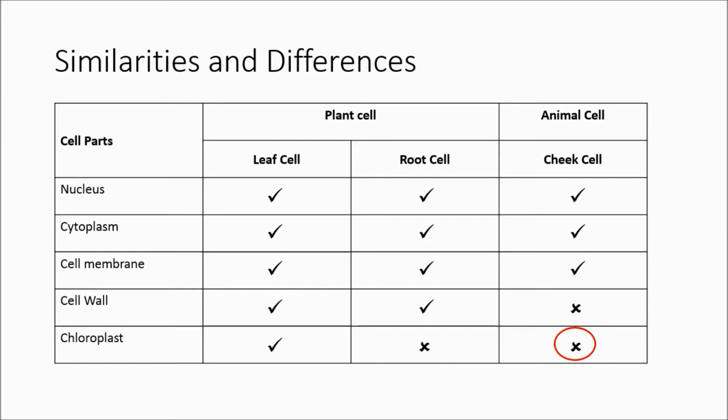Why doesn't the root cell have chloroplasts? Well, the roots are found underground. They do not receive sunlight. So, there is no point in having chloroplasts in root cells if they do not receive sunlight.